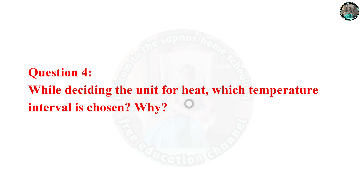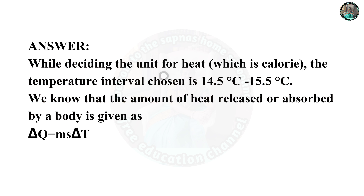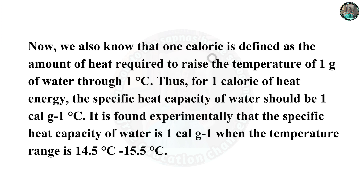Question 4: While deciding the unit for heat, which temperature interval is chosen and why? While deciding the unit of heat, which is the calorie, the temperature interval chosen is 14.5°C to 15.5°C. The amount of heat released or absorbed is given as ΔQ = MS·ΔT. One calorie is defined as the amount of heat required to raise the temperature of 1 gram of water through 1°C. It is found experimentally that the specific heat capacity of water is 1 calorie per gram per degree Celsius when the temperature range is 14.5°C to 15.5°C.